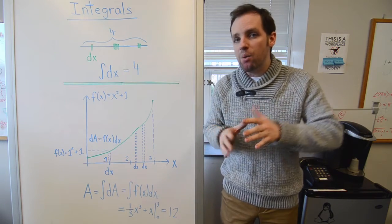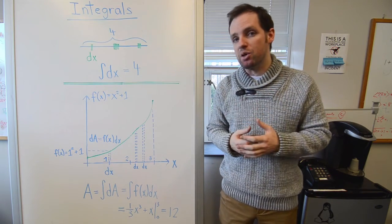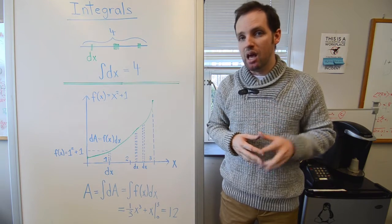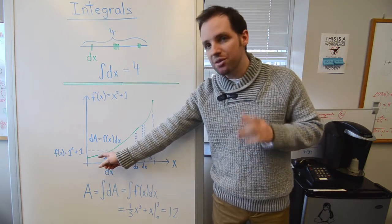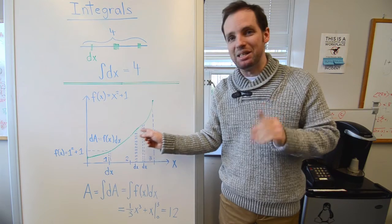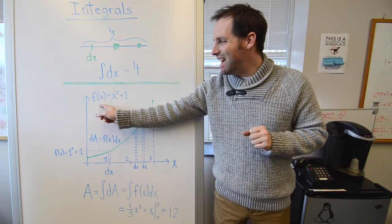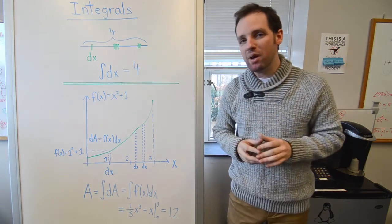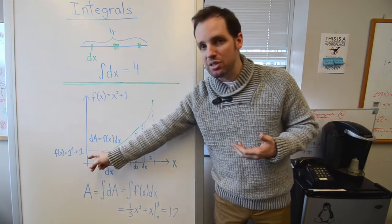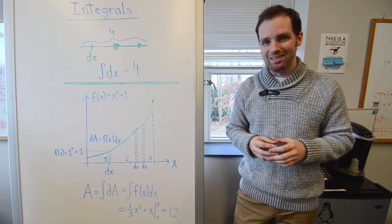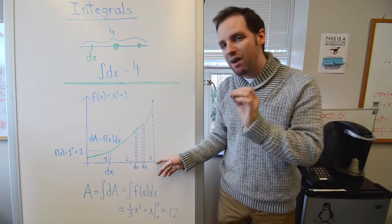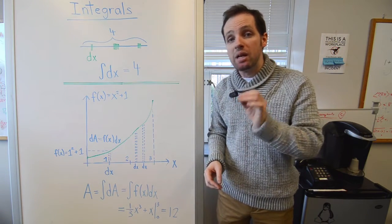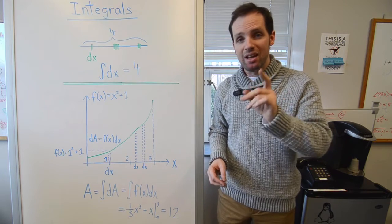So how is it that we can interpret the area under a curve in terms of an integral? Well, to see how, consider the function that I've drawn admittedly poorly here in green, f of x equals x squared plus 1. And suppose we want to know what the area under this curve is between 0 and 3. Now as before, I've divided this x-axis into an infinite number of little lengths, dx.